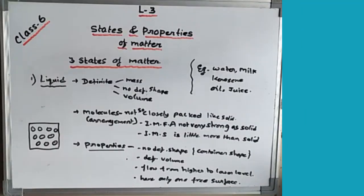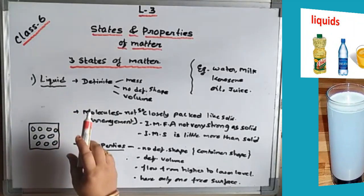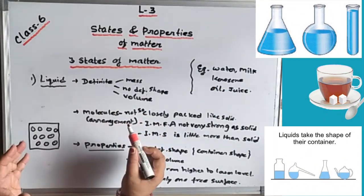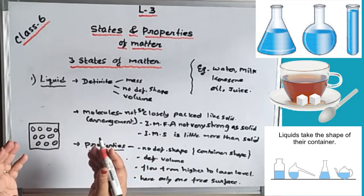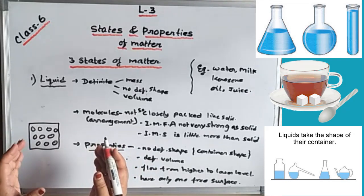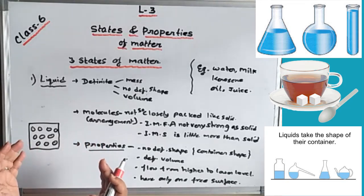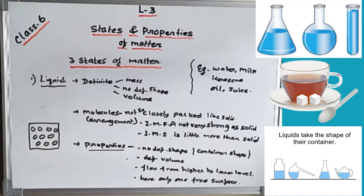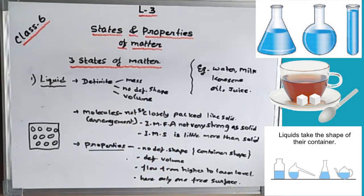Now let us talk about the second state of matter — liquid. Liquid has a definite mass but no definite shape. It takes the shape of the container in which it is kept. If water is kept in a glass, it takes the shape of the glass; in a bottle, the shape of the bottle; in a cup, the shape of the cup. That's why we say liquid has no definite shape.